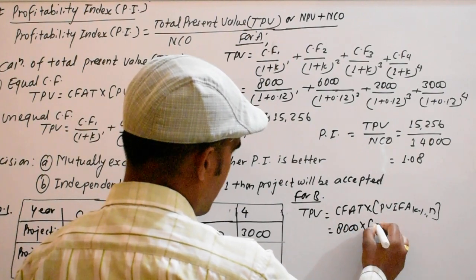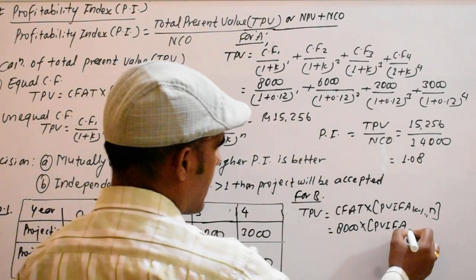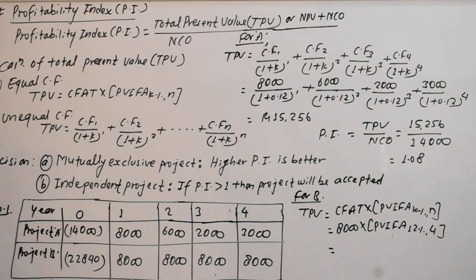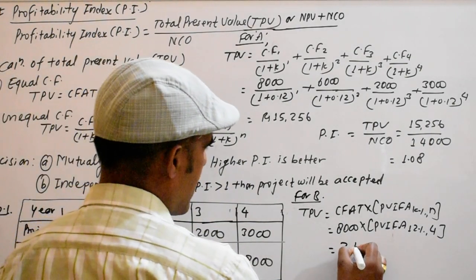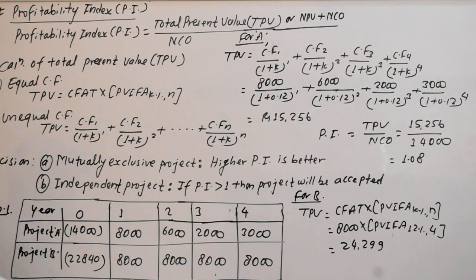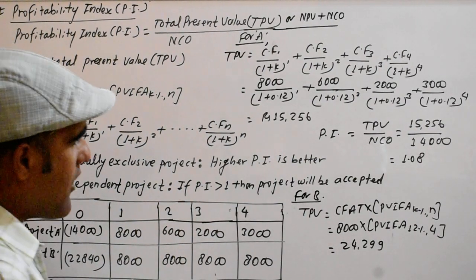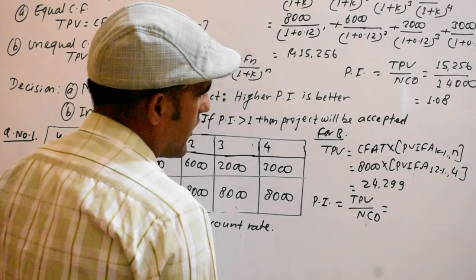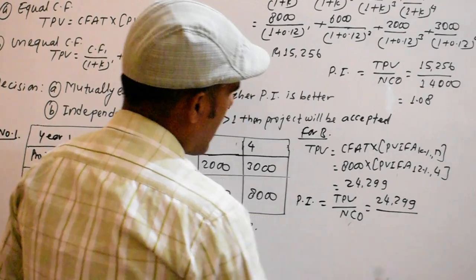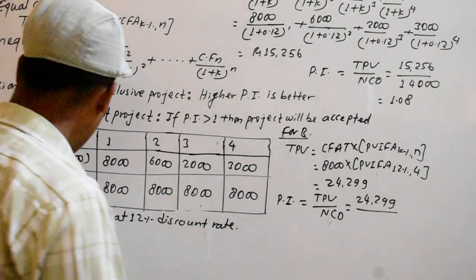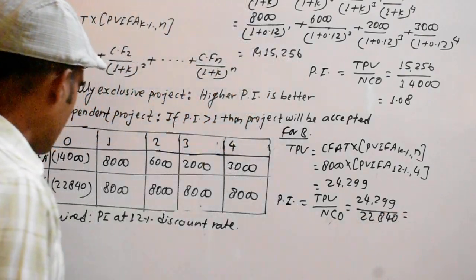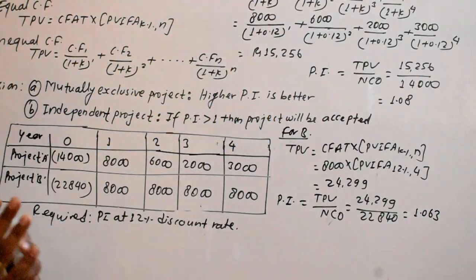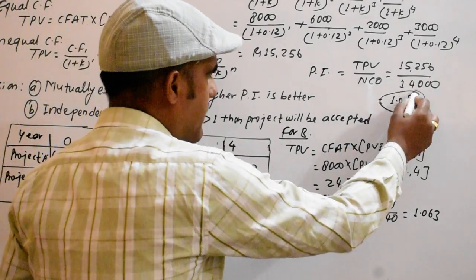We are going to have 8000 times the table factor — approximately 504,299 — giving a total present value of 24,299. The initial investment for Project B is 22,840, so NPV is 2,839. The Profitability Index for Project B is 24,299 divided by 22,840, which equals approximately 1.063.